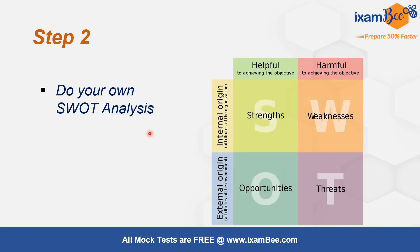Moving to Step 2 — do your own SWOT analysis. You need to know your strengths, weaknesses, opportunities, and threats, and analyze them yourself with respect to preparing for the SEBI Legal exam. For example, Constitution might be your strength, Companies Act you might know well, but Securities Law you may not know. Reasoning and English might be strong for you while GA and Quant may not be. These are your individual strengths and weaknesses that you need to identify.